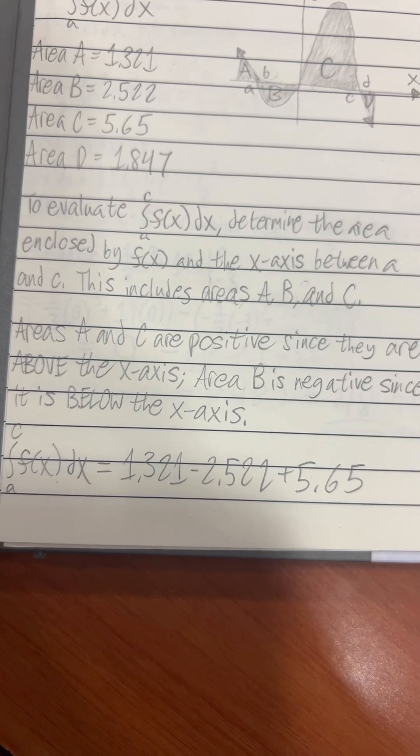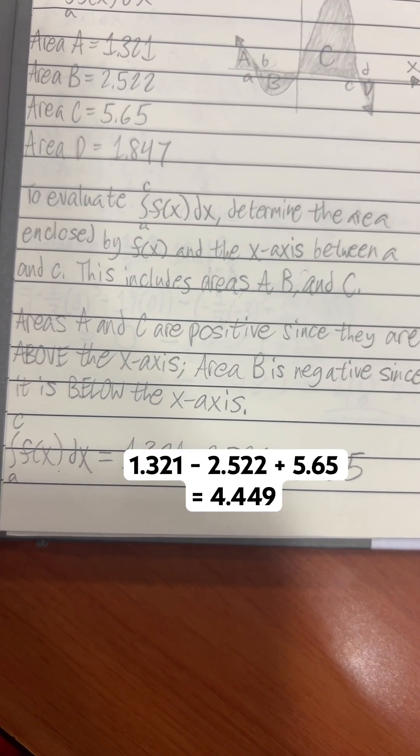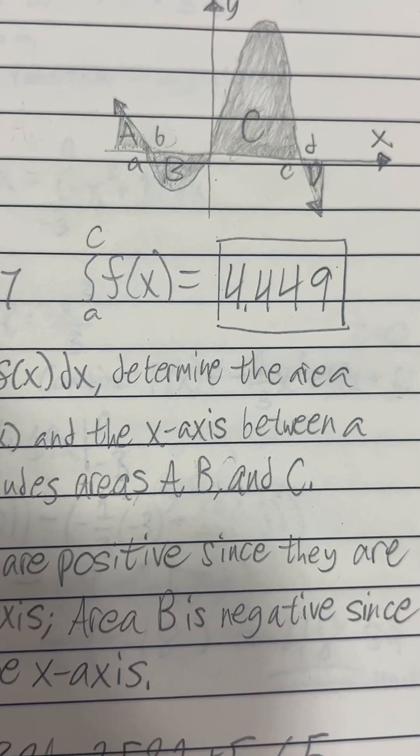So to calculate this definite integral, you gotta find the cumulative sum of areas A, B, and C. So the integral is equal to 4.449.